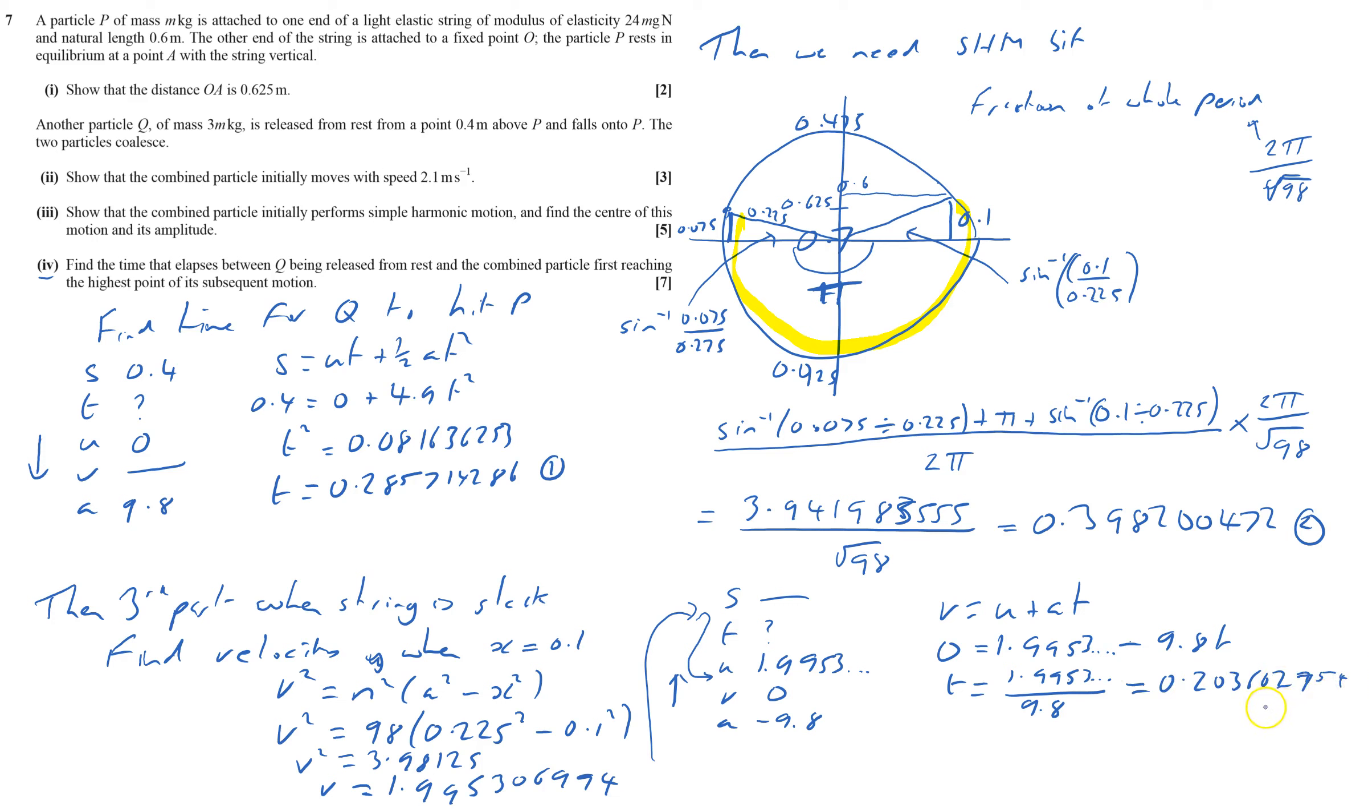And that's the third part of the journey. So the total time equals the first part plus the second part plus the third part and that equals 0.887517512 seconds. And that's the last part of question 7 on a really pretty challenging M3 paper and that's done.